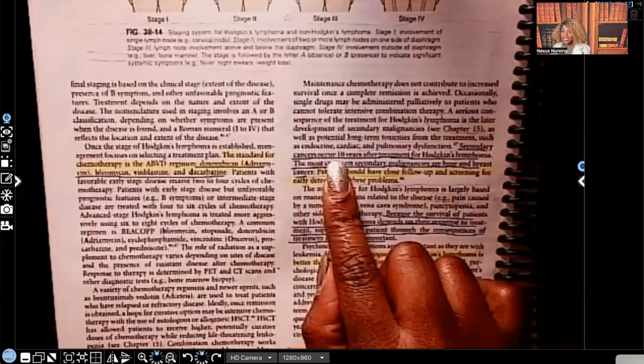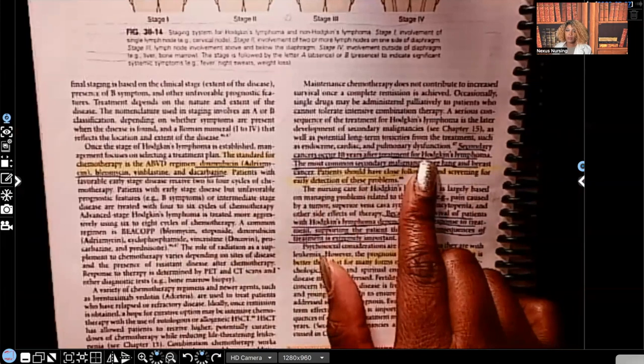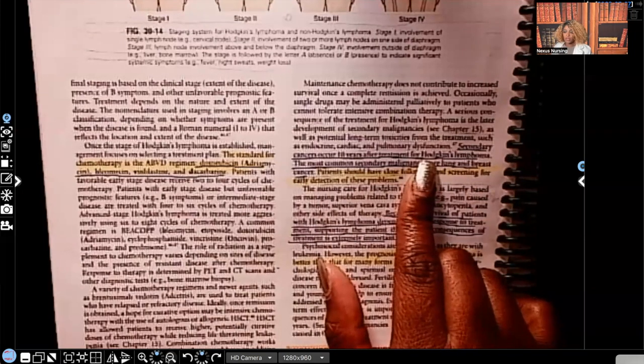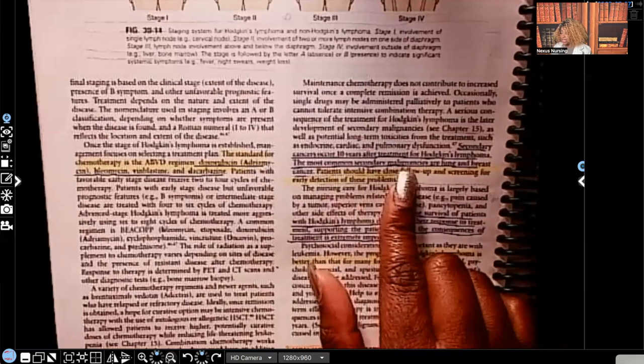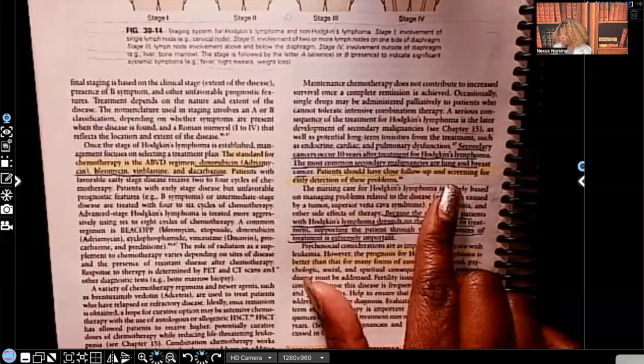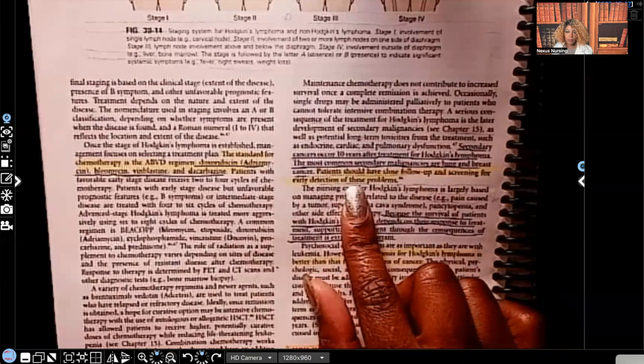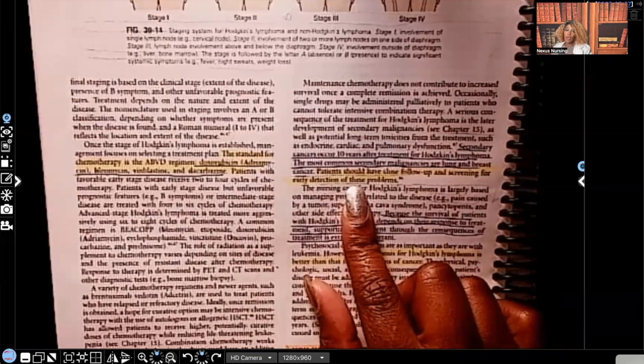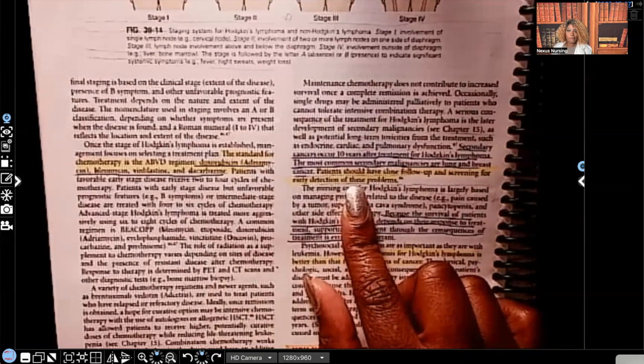Secondary cancers occur 10 years after treatment for Hodgkin's lymphoma. So after that patient's been treated for the Hodgkin's lymphoma, there's very high chance the patient will get another cancer. The most common secondary malignancies are lung and breast cancer. Patients should have close follow-up and screening for early detection of these problems. You need to teach that patient, in addition to this, the female patient, well actually male-female, you need to teach them that at least every month while they're in the shower to go ahead and do that breast self-breast examination. Because it is possible for males to also get breast cancer.